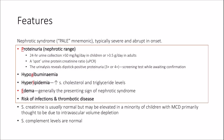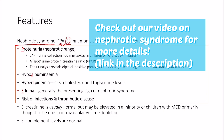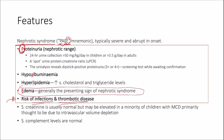Minimal change disease presents with nephrotic syndrome. We've used the PALE mnemonic in our previous video to help memorize the features of nephrotic syndrome: P stands for proteinuria, A for hypoalbuminemia, L for hyperlipidemia, and E for edema — and edema is generally the presenting feature of nephrotic syndrome. Some patients may present with a complication such as infections or thrombotic disease. The proteinuria in minimal change disease is in the nephrotic range, which is more than 50 milligrams per kg per day in children, or more than 3.5 grams per day in adults.